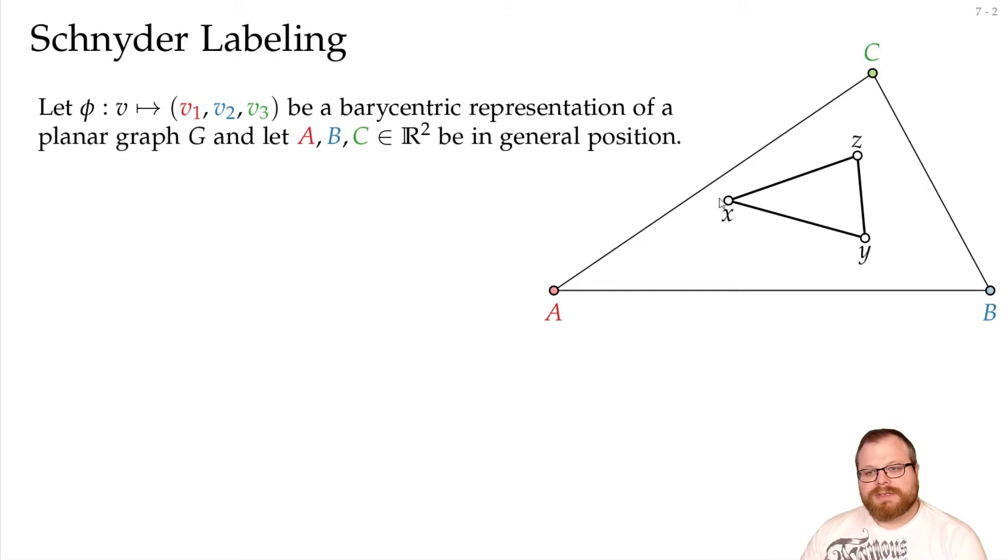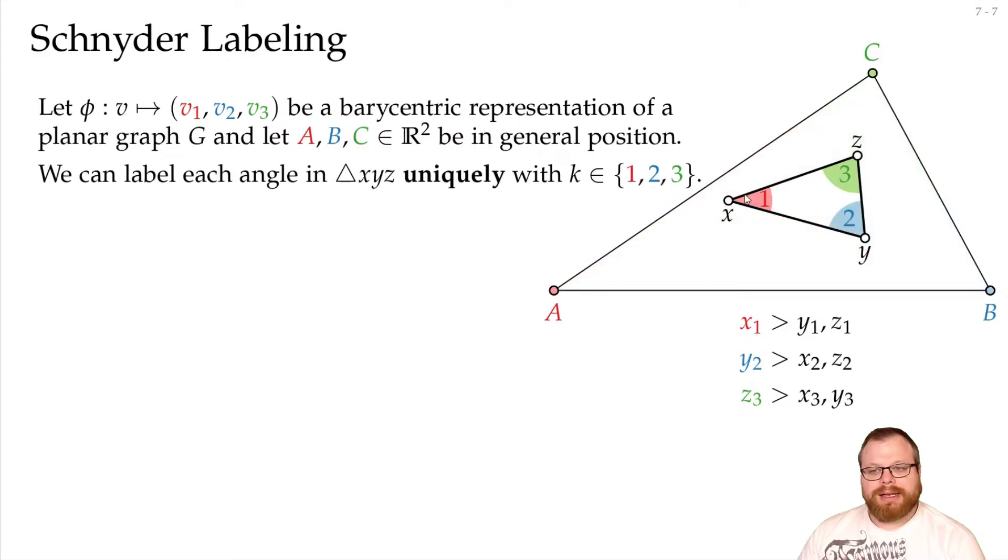By our property, for some index, x must be larger than both y and z. There is some index such that x is closer to a here than y and z are. Then there must be some index such that y is larger than x and z are. And this cannot be the same index as in the first, because otherwise we have a contradiction. Then we have x1 greater y1 greater x1. And then for the third index, z has to be larger than x and y. Following these indices, we can put a label at every angle inside this triangle.